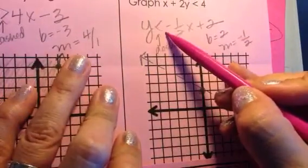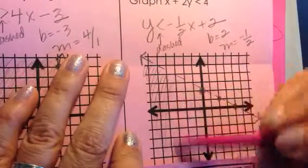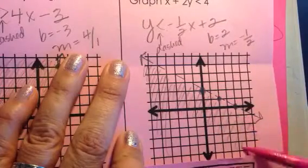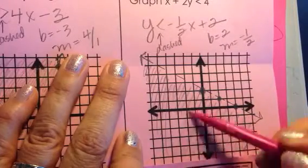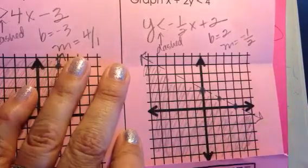Cool. And then, I'm going to look and say that it reads y is less than. So, I'm going to shade everything underneath that y-intercept of 2. Y values less than are going to make this true. So, anything, any points in my shaded area would be solutions to this inequality.